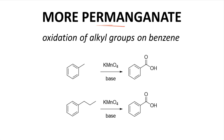Permanganate is a very strong oxidant. In addition to cleaving alkenes, permanganate can oxidize alkyl chains on a benzene ring. A common example is the oxidation of a methyl group on a benzene ring to give a carboxylic acid. You do not need a methyl group, however — permanganate is so strong that it will oxidize an alkyl chain, removing the entire chain and leaving behind just one carbon for the carboxylic acid.